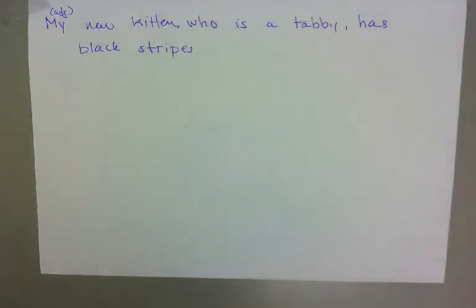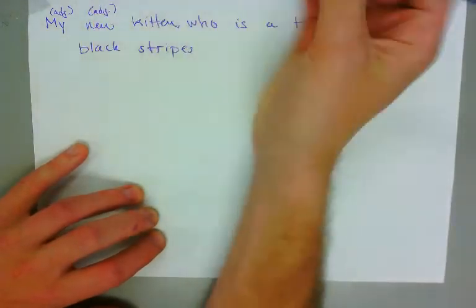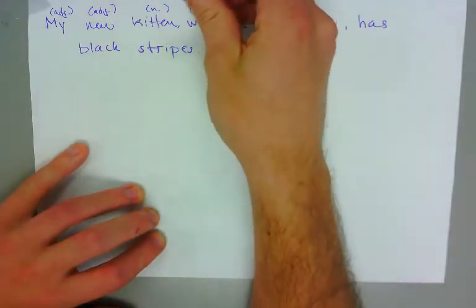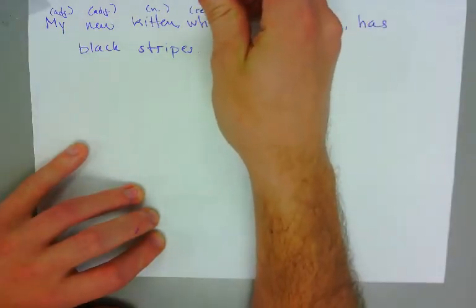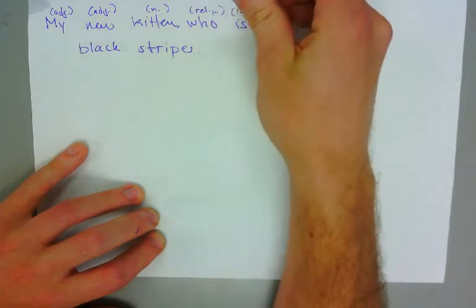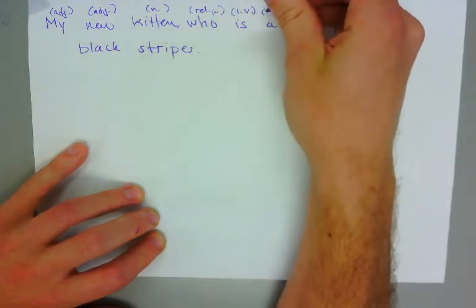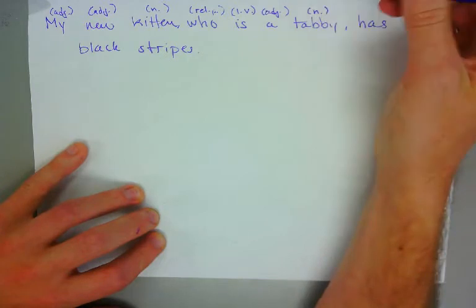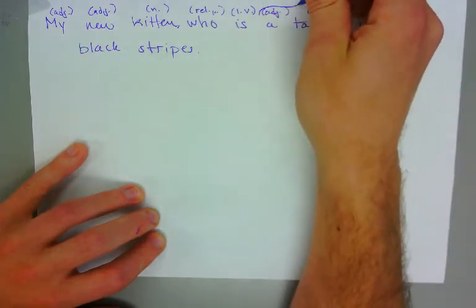So this first sentence here, we'll label the component parts and then we'll determine what type of clause we're looking at. 'My' is typically a possessive pronoun, but we have the antecedent, so in this case the pronoun is being used as an adjective. 'New' is also an adjective. 'Kitten,' of course, is a noun. 'Who' is a relative pronoun. 'Is,' of course, is a linking verb. 'A' is an indefinite article, also known as an adjective. 'Tabby' is a noun.